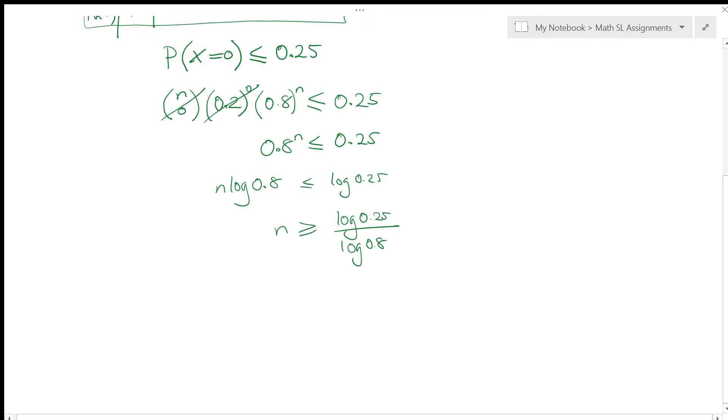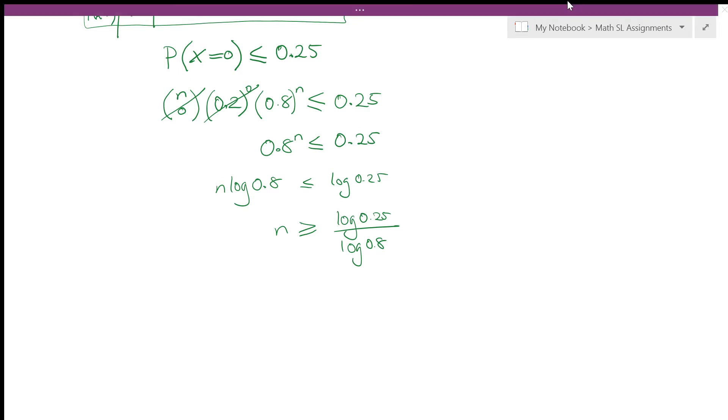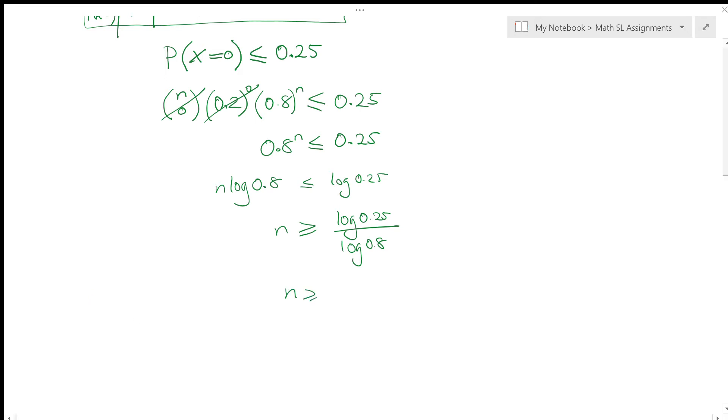So now I can use my calculator here. So I can do this for you here. So I have log 0.25. You can see that's also negative. But then when I divide it by log of 0.8, I should end up with a positive. So n needs to be greater than or equal to 6.21.